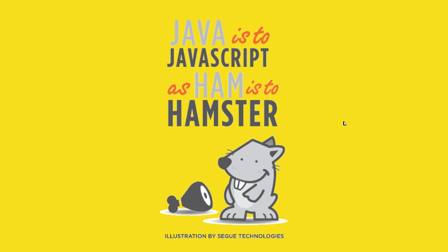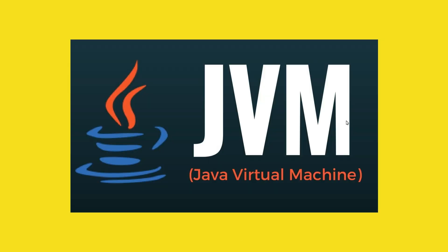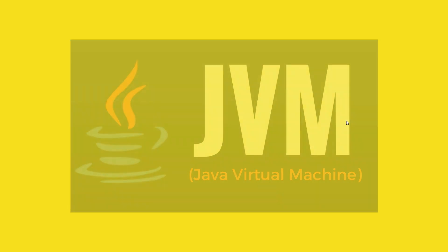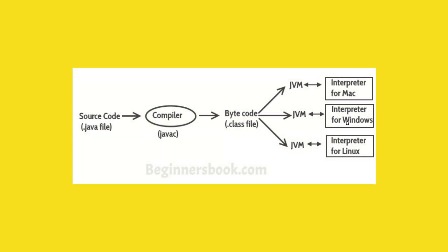Java runs on the JVM. Suppose we have Java source code — this goes to the compiler, which produces bytecode. Almost all languages work the same way.